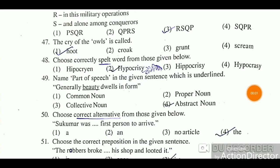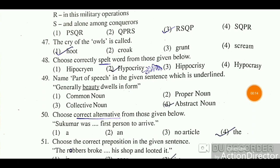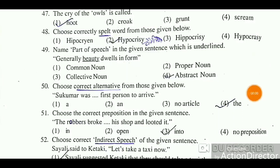Question 48: Choose the correctly spelled word from those given below. The word 'hypocrisy' — this is the correctly spelled word. 'Hypocrisy' means 'dhongipana' (pretense/deceit) in Marathi. This is the correct answer.